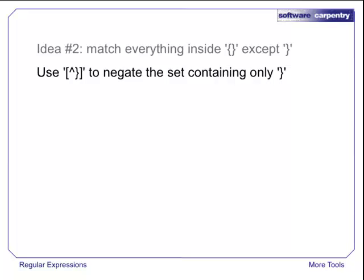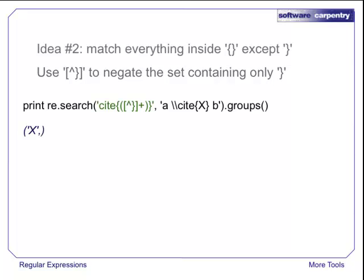The expression square bracket, circumflex, closing curly brace, closing square bracket, therefore matches every character except a closing curly brace. This works for a single citation. All we've done is change dot to the negated set. What about multiple citations on a single line?